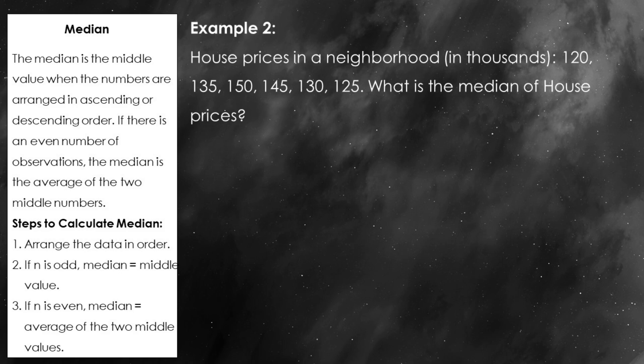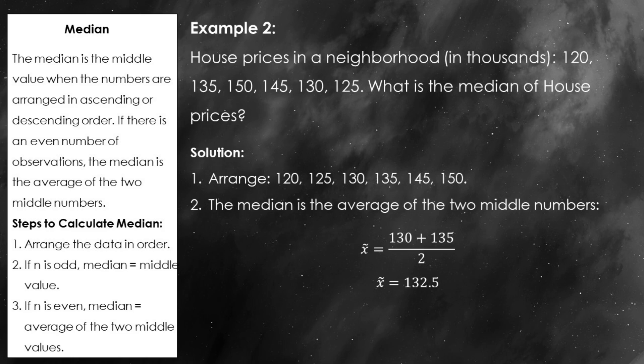Let's calculate the median for house prices in thousands for six homes in a neighborhood: 120, 135, 150, 145, 130, and 125. The first step is to arrange these numbers in ascending order. Since we have an even number of data points — six in total — the median is going to be the average of the two middle values. In our sorted list, the two middle values are $130 and $135. Median equals 130 plus 135 all over 2, which equals 132.5. So the median house price in this neighborhood is $132,500. The median gives us a better sense of the middle house price, especially when we have extreme values or outliers, because it's not influenced by the highest or lowest prices.